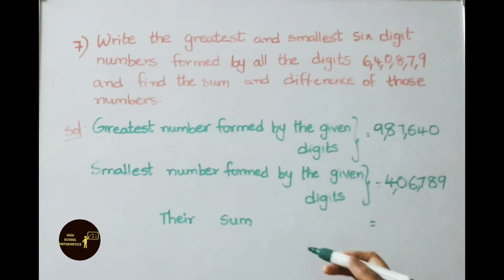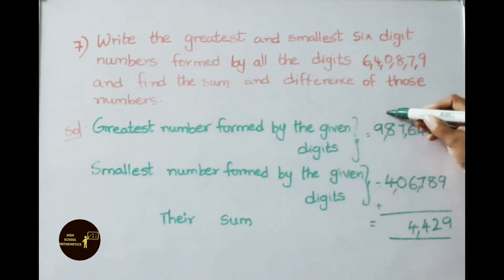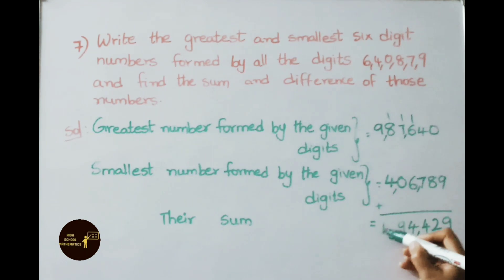Now we need to find their sum. Let us add them. 0 plus 9 is 9, 4 plus 8 is 12, 2 carry 1. 1 plus 6 is 7, 7 plus 7 is 14, so 4 carry 1. 7 plus 1 is 8, 8 plus 6 is 14, 4 carry 1. 1 plus 8 is 9, 9 plus 0 is 9, 9 plus 4 is 13. So the answer is 13,94,429.